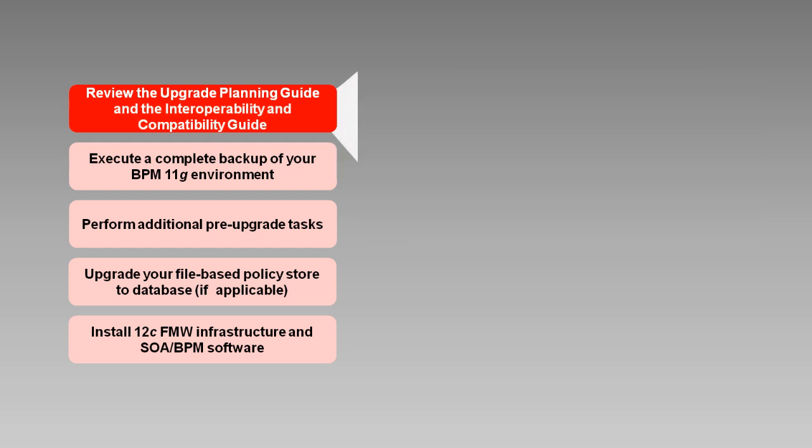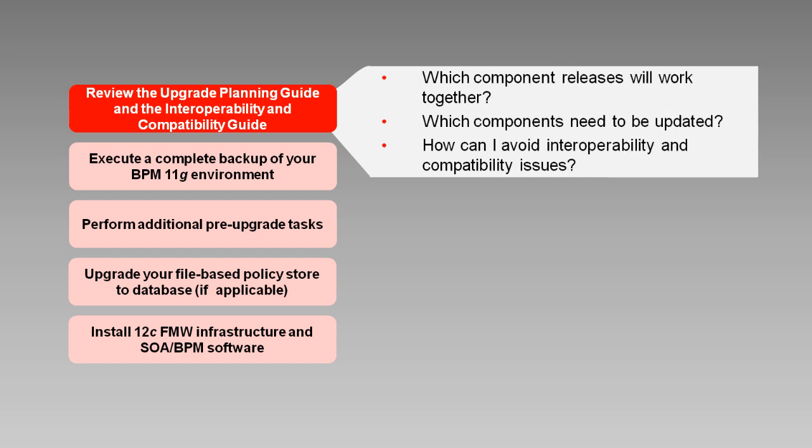The Interoperability and Compatibility Guide helps you determine whether various Fusion Middleware components of different versions or releases will work together in a supported configuration. For example, certain components in your environment may need to be updated before you upgrade to BPM Suite 12C. This document will guide you through the process of identifying relevant components, determining version information, and avoiding specific interoperability and compatibility issues.